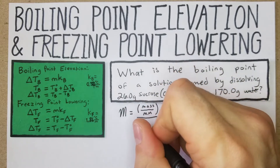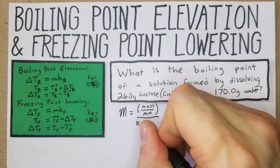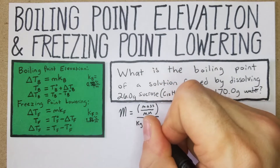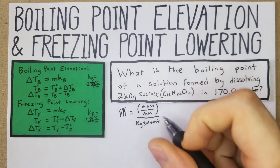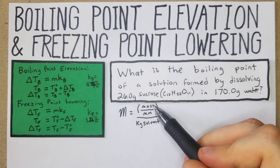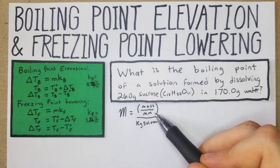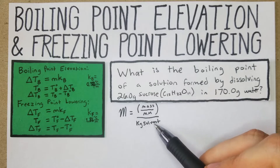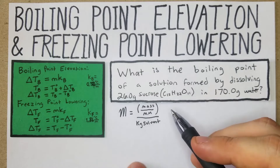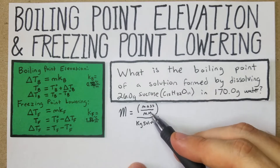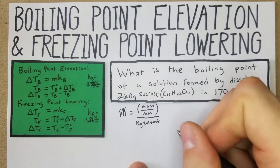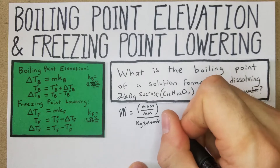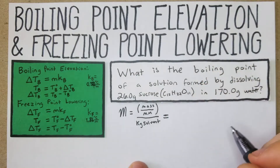Basically we're trying to find the molality — moles of solute per kg of solvent. Up top we have mass over molar mass, and then all of that is divided by the kg of solvent. This gives us our moles, and then we just proceed from there. Let's start plugging in what we have and what we need.